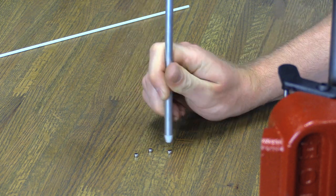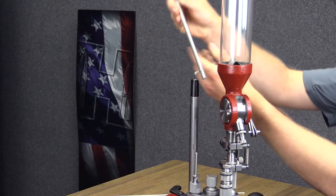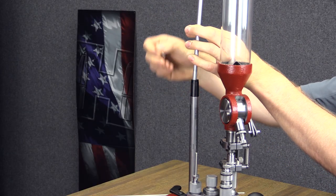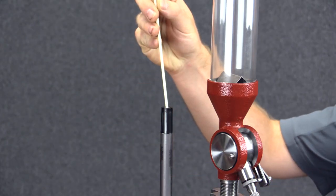Once your dies are set, use the primer pickup tube to pick up the primers with the flat base side facing up. Flip the primer pickup tube and drop the primers anvil side up into the primer tube, followed by the primer follower.